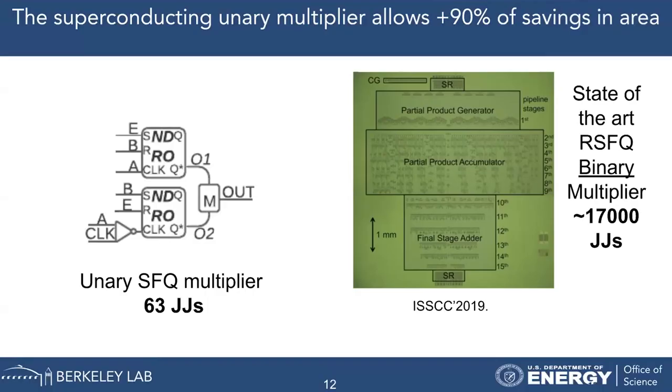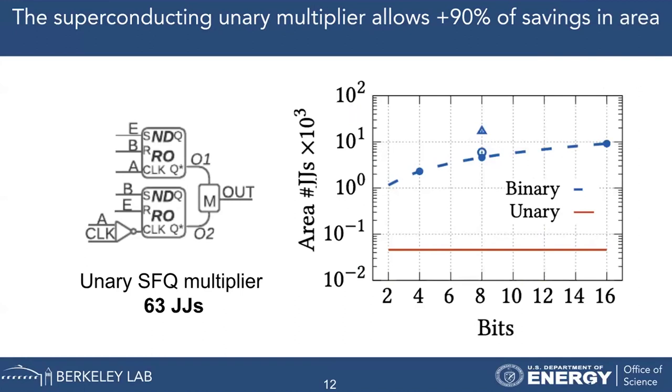My Unary SFQ multiplier requires only 63 JJs. Comparing this with the 17,000 JJs needed for a binary multiplier, I am achieving 90% savings in area — getting more computing out of each JJ. Additionally, for a binary multiplier, area increases with the number of bits, but for a unary multiplier, I can adjust the resolution of computation using the same hardware. The area stays the same, which is another advantage.